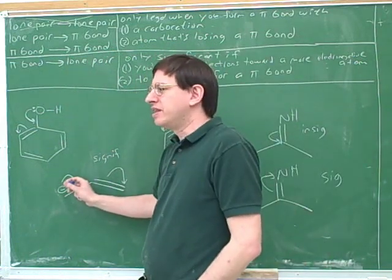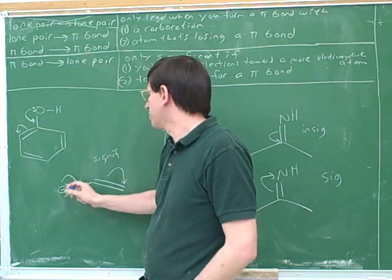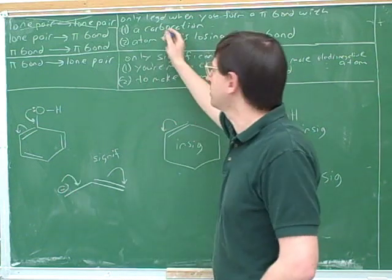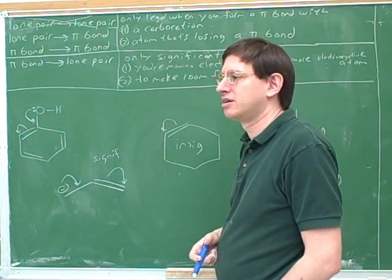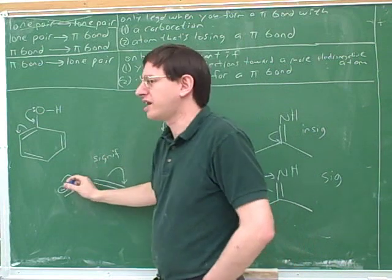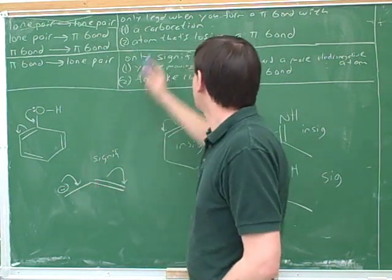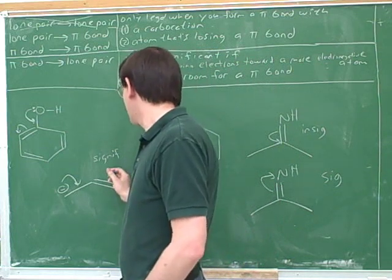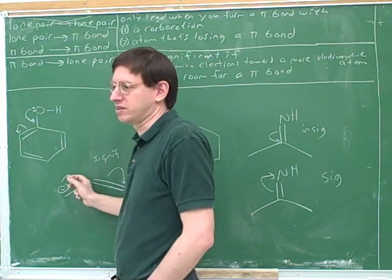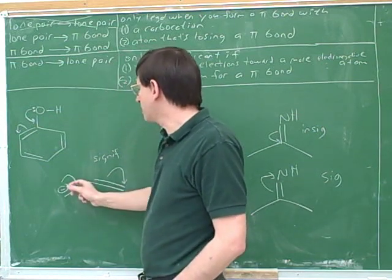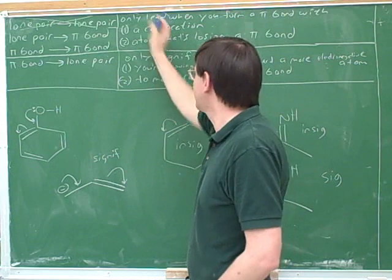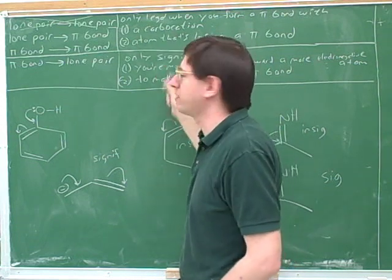Now how about this? In this case we're not forming a lone pair — we're forming a pi bond. So we don't ask if this is significant; we ask if it's legal. Is this a legal arrow based on these criteria? Yes. It's legal because we're making the pi bond with an atom that's losing a pi bond. So the fact that this arrow is significant also tells us the other arrow is legal. We have to check all the arrows — when forming pi bonds, check legality; when forming a lone pair, check significance. This is the table that summarizes resonance.